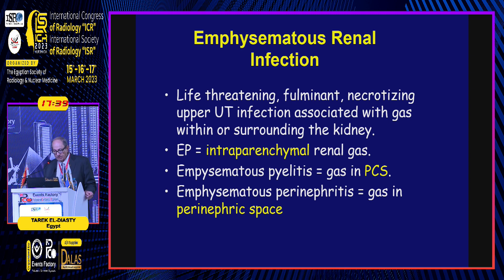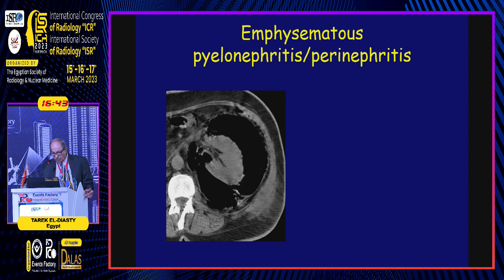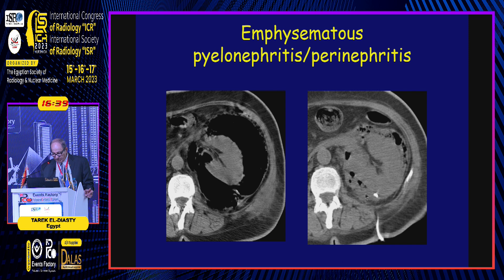Regarding infection, emphysematous renal infection is a life-threatening, fulminant necrotizing upper urinary tract infection, usually associated with gas within or surrounding the kidney. When there is gas in the renal parenchyma, it is called emphysematous pyelonephritis. Emphysematous pyelitis refers to air only in the pelvicalyceal system, and if the air is mainly outside in the perinephric tissue, it is called perinephric emphysematous pyelonephritis. This case of emphysematous pyelonephritis shows air in the perinephric space with small foci in the kidney. We perform nephrostomy for the kidney, and this perinephritis also requires drainage of the large amount of air by percutaneous tube.